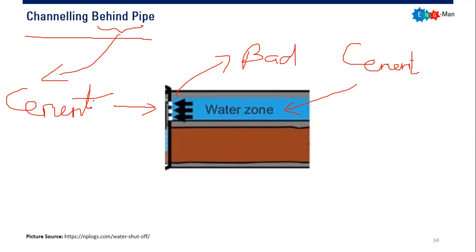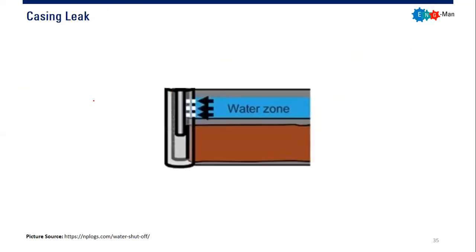And lastly, this is the bad news — your casing is just leaking. Your casing is leaking, and of course it will be very easy for the water to go towards your leakage, the holes on your casing.